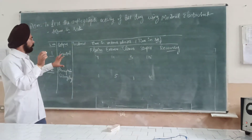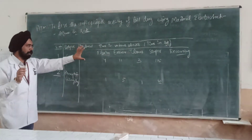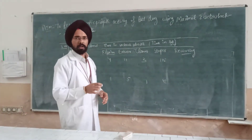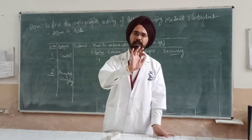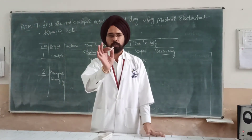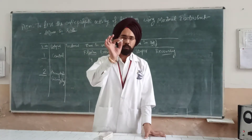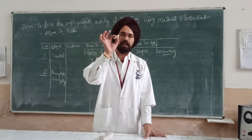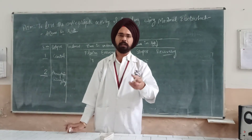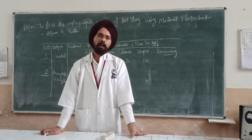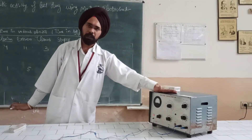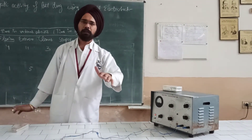If we see the result table shown on the board, before discussing it, let us look at the requirements for this practical. We require a rat weighing 150 to at least 200 grams. We also require phenytoin drug, which is an anti-epileptic drug, a GABA-A subtype receptor agonist. We also require an electroconvulsio meter, saline, and an animal cage.